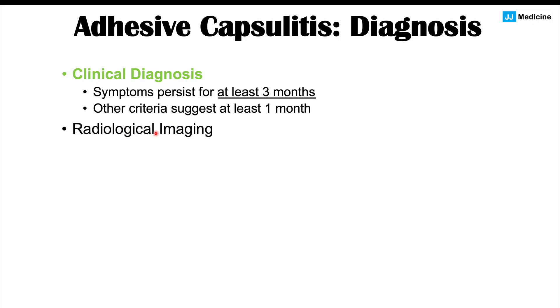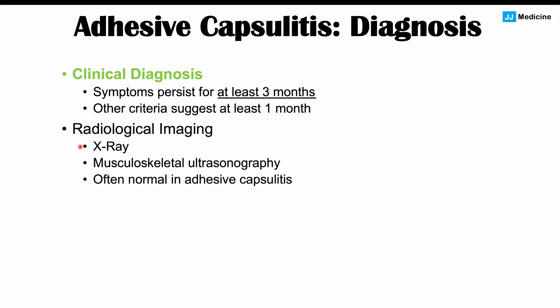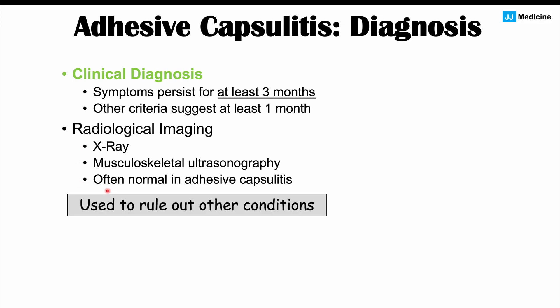Radiological imaging may be used in some cases. X-ray and musculoskeletal ultrasonography can be used, but these are mostly used to rule out other conditions. In adhesive capsulitis, these imaging modalities are often normal.